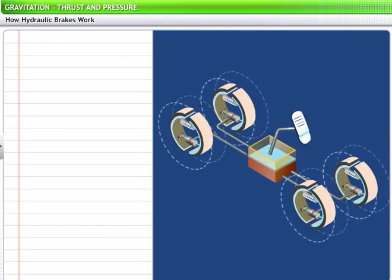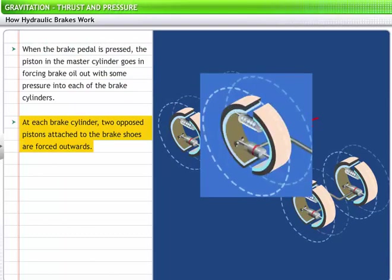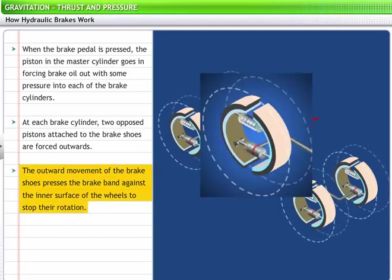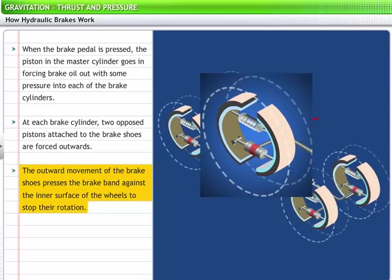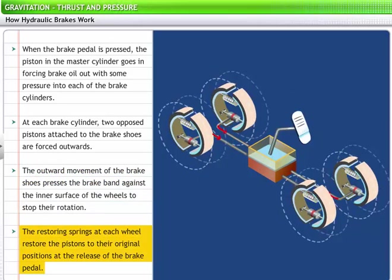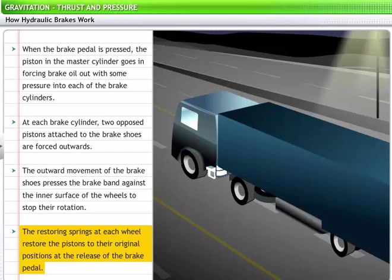Now let's see how this arrangement of hydraulic brakes works to enable a driver to stop a car when driving. When the brake pedal is pressed, the piston in the master cylinder goes in, forcing brake oil out with some pressure into each of the brake cylinders. At each brake cylinder, two opposed pistons attached to brake shoes are forced outwards. The outward movement of brake shoes presses the brake bands against the inner surfaces of the wheels to stop their rotation. When brake pedal is released, the restoring springs at each wheel restore the pistons to their original positions. Thus hydraulic brakes in automobiles employ the concept of pressure to enable drivers to stop heavy vehicles by applying a relatively light touch on the brakes.